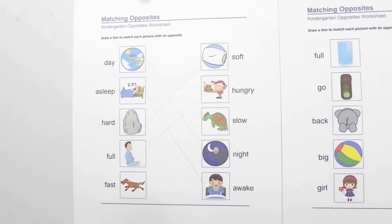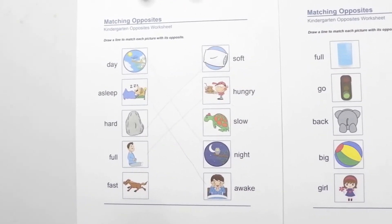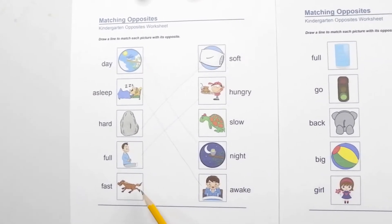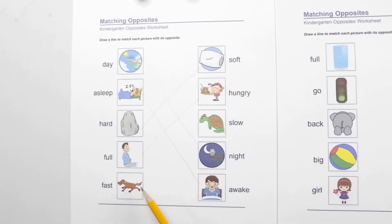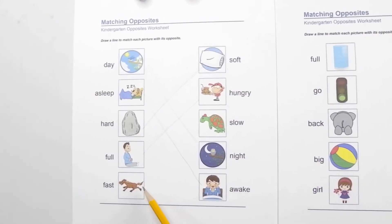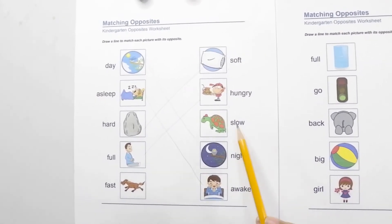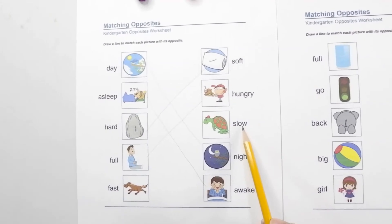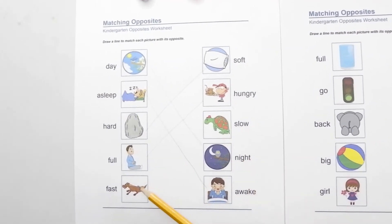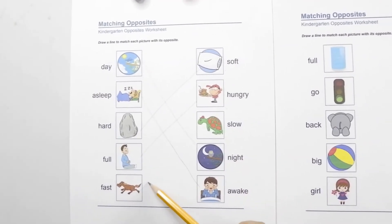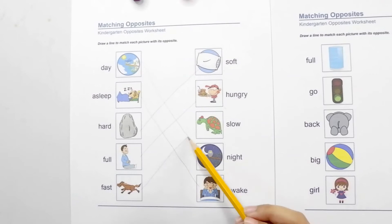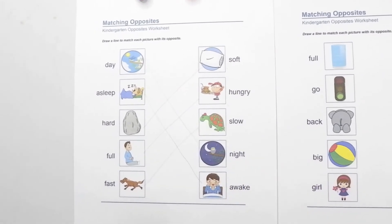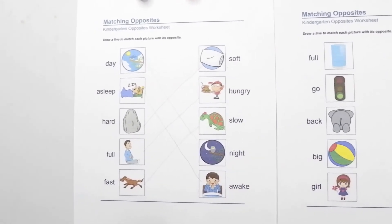How about fast? Fast directly contrasts with slow, just like this turtle. Let's match it — fast and slow are opposites.